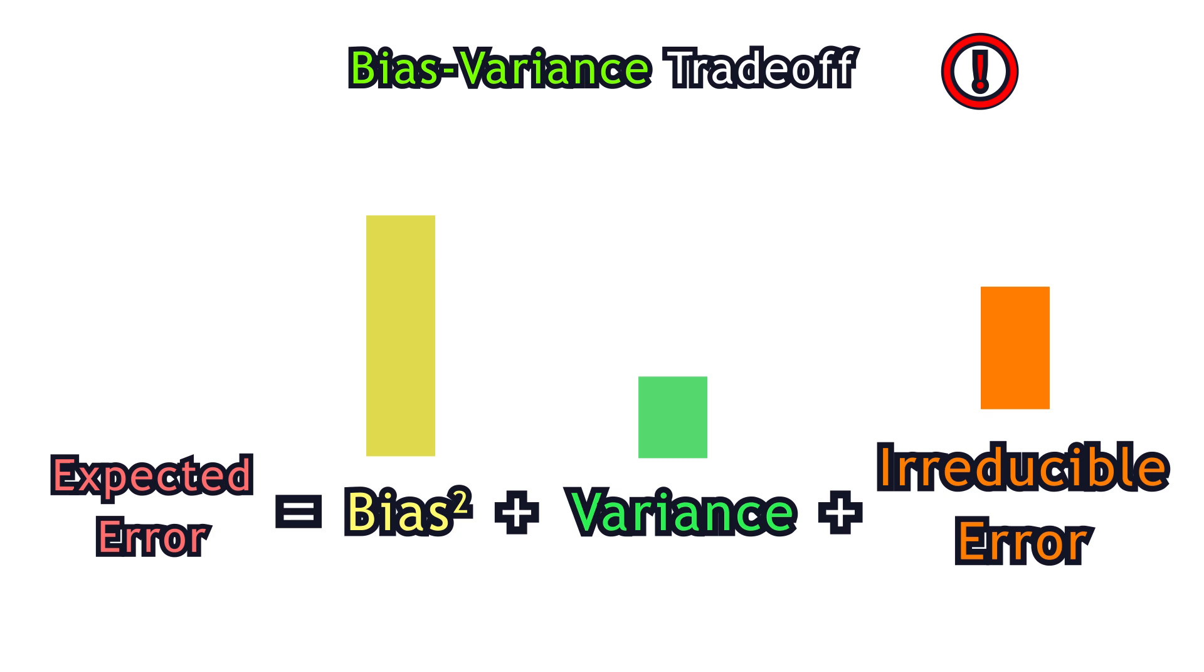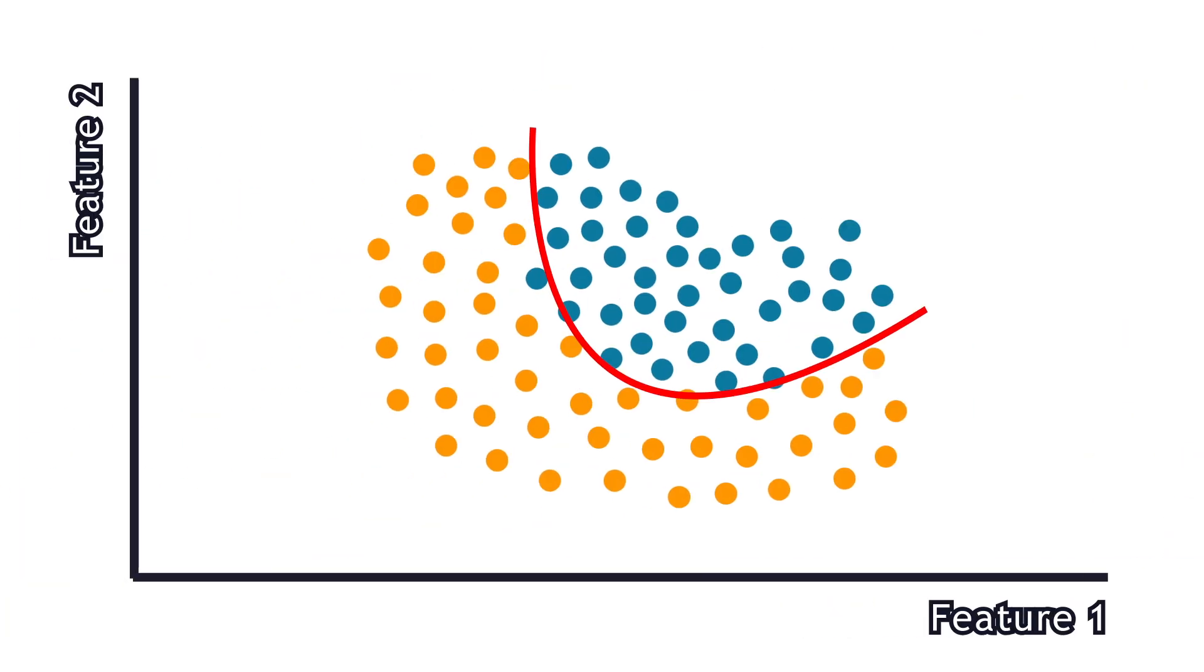Conversely, simplifying the model to reduce variance tends to increase bias. The goal is to find a balance where both bias and variance are minimized, meaning a model that is applicable to new data and is complex enough to capture enough patterns.